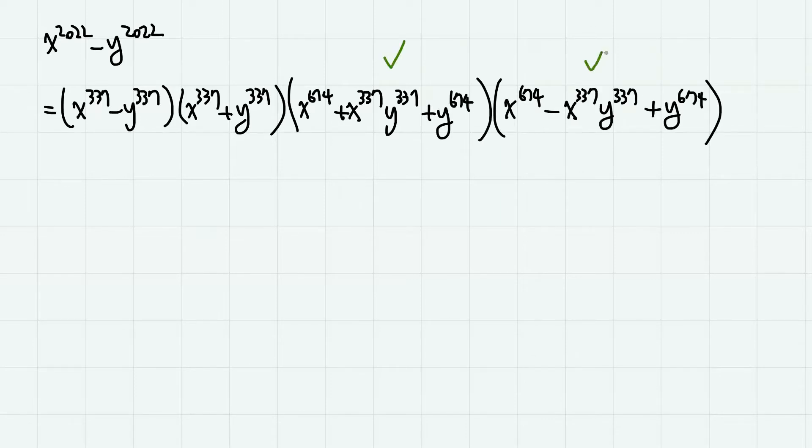Now let's take a look at the last two factors first. If we write for a more general case, they are x to the power of 2m plus x to the m times y to the m plus y to the power of 2m, and minus x to the m times y to the m plus y to the 2m. Here, when m is odd, just like in our case, there are no general ways to further factorize these polynomials.